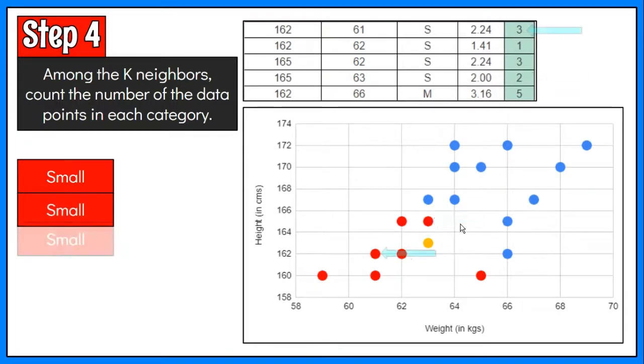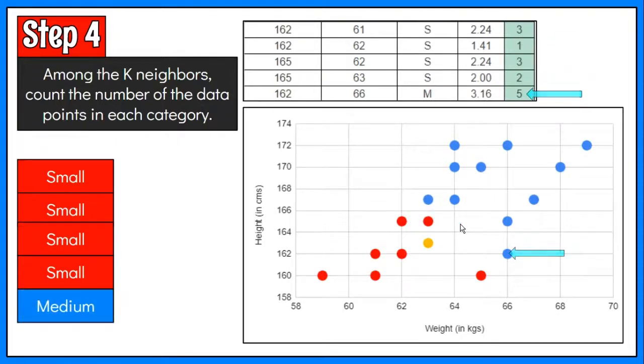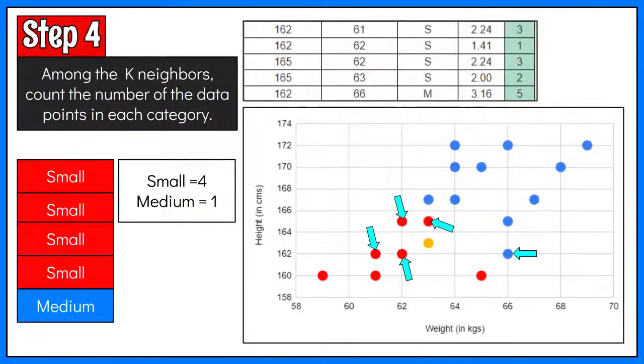Looking at the graph, these are the first to fifth ranks in terms of the shortest distance between the sample labeled data and the new data. There are four red data points and one blue data point close to the orange dot. We can also say that there are four small size and one medium size shirts that are close to the new case.